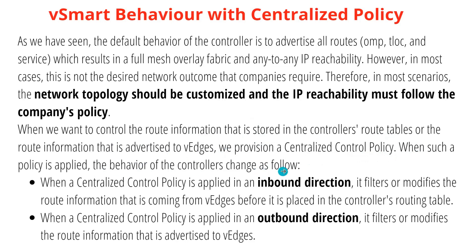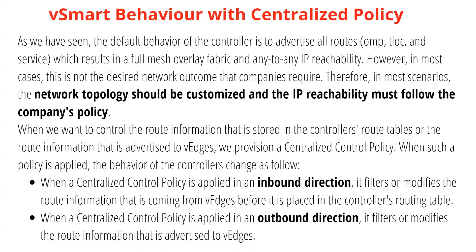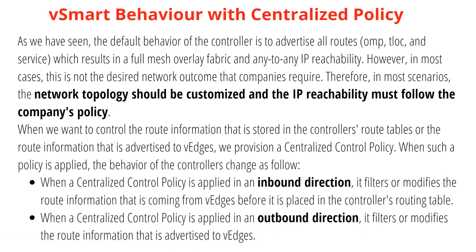When we want to control route information stored in the controller's route table or advertised to vEdges, we provision a centralized control policy. There are two types: when a centralized control policy is applied in inbound direction, it filters and modifies route information coming from vEdges before it is placed in the controller's routing table. The policy is applied to the vSmart. In outbound direction, the policy is applied to the vEdges.